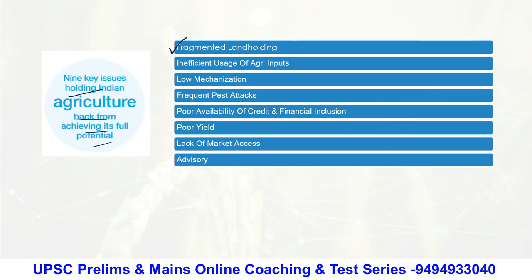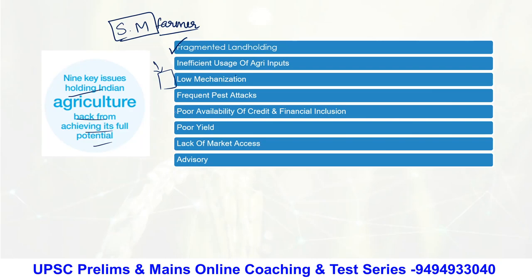The first main issue related to agriculture is fragmented land holdings. In India, we have mostly small and marginal farmers holding smaller lands. For that particular small land, a farmer cannot bring in proper technology — cannot use drones for surveillance, cannot use high quality fertilizers or maintain a database. So if the land is fragmented, the investments with respect to that land will also get reduced.